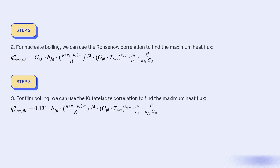Step 3: For film boiling, we can use the Kutateladze correlation to find the maximum heat flux Qmax, equal to 0.131 times Hfg times G times (rho_L minus rho_V) times sigma divided by rho_V, raised to 1/4, times CPL times Tsat to the 3/4, times (mu_L divided by mu_V) times L³ divided by Hfg times CPL.